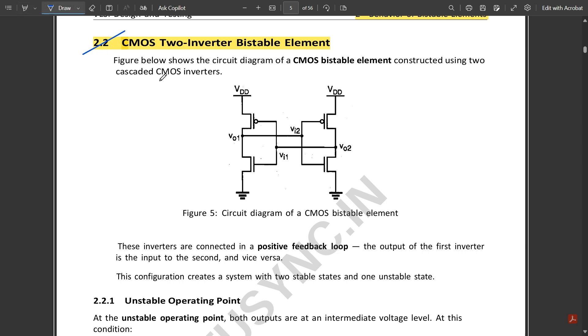The figure shows the circuit diagram of a CMOS bistable element constructed using two cascaded CMOS inverters. This is a cascaded connection based on cross-coupled using CMOS implementation.